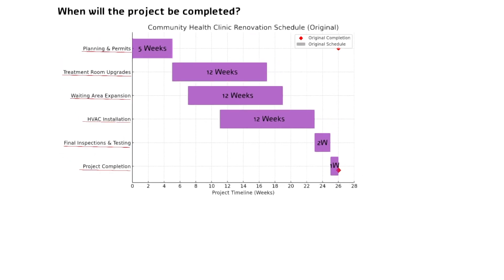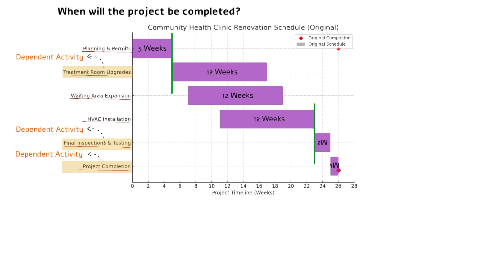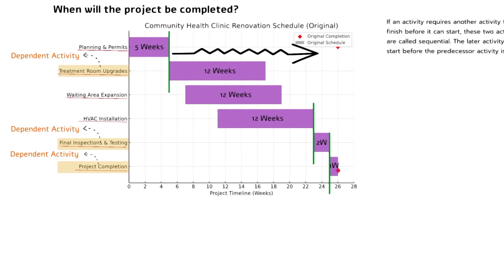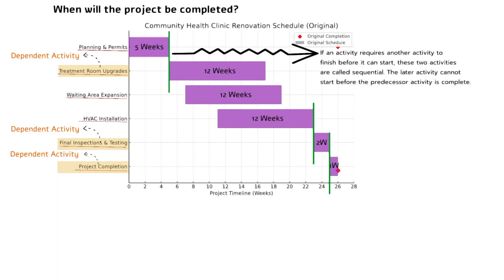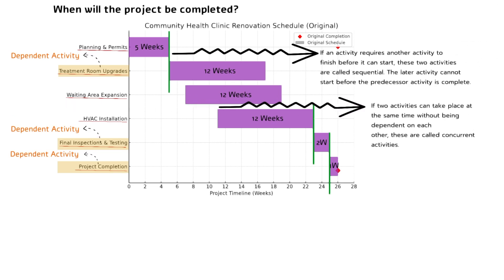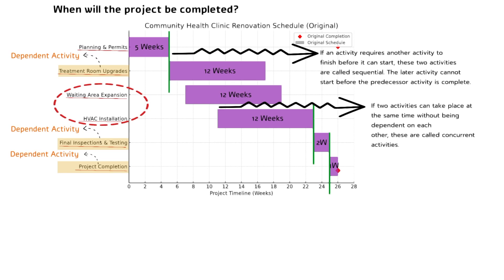When we get back to our chart, we see that treatment room upgrades is a dependent activity — it depends on the planning and permits process to be completed and cannot start before that. Similarly, final inspections and testing has to wait for HVAC installation to get completed, and project completion has to wait for final inspections and testing to be done. So these three activities are dependent on another activity. If an activity requires another to finish before it can start, these are called sequential activities. If two activities can take place at the same time without being dependent on each other, these are called concurrent activities. For example, waiting area expansion and HVAC installation are concurrent activities.